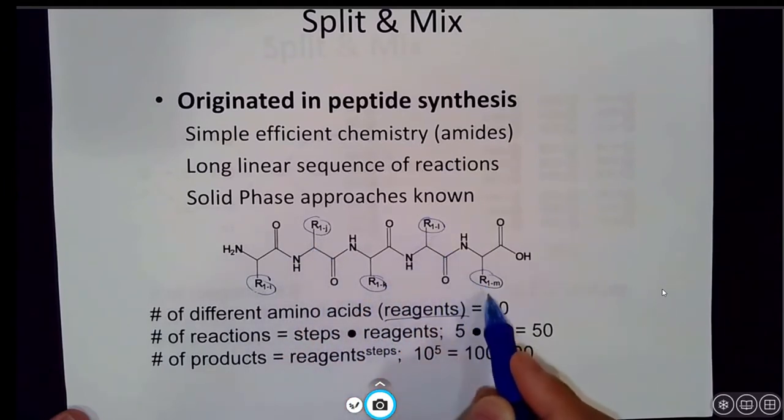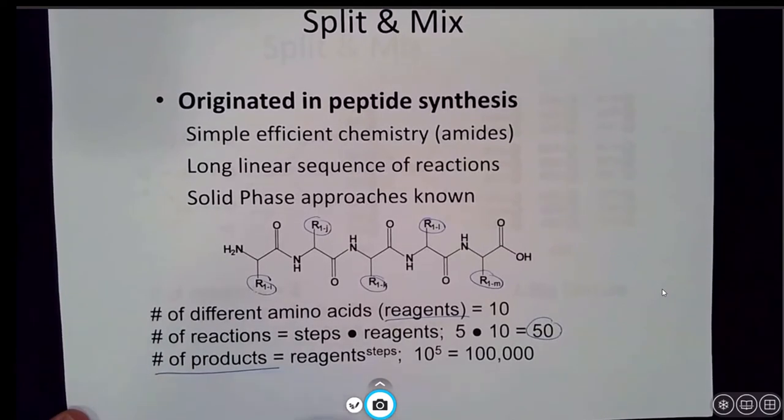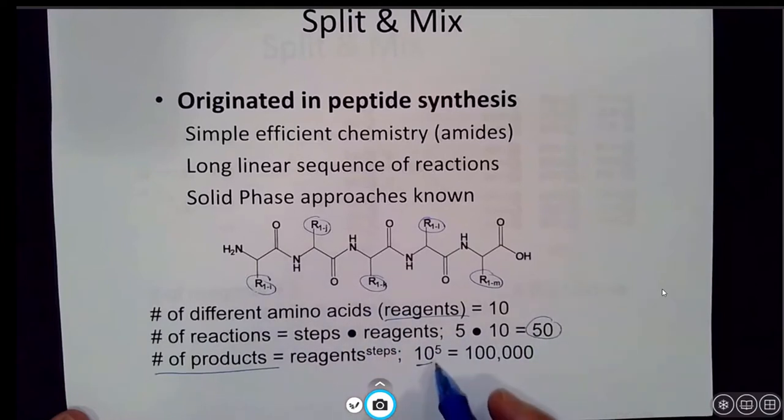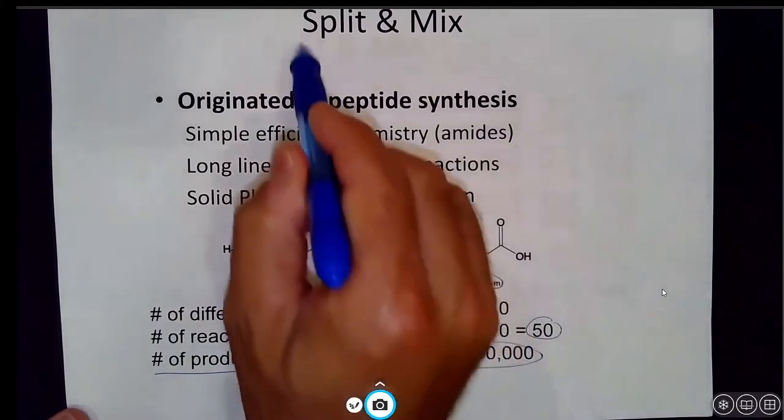However, if you put these in different combinations, you can actually get a huge amount of different products. The number of different products is going to be equal to the number of reagents, or in this case the number of different R groups, which is 10 to the power of different times that it is being employed in that reaction. In this case we have one, two, three, four, five - so 10 to the power of 5 is 100,000 different unique structures, just by having a pentamer with 10 different amino acids available to you. That's a pretty powerful way to generate a vast library of unique structures. This is something called the split and mix synthesis, and I'm going to tell you how that works.